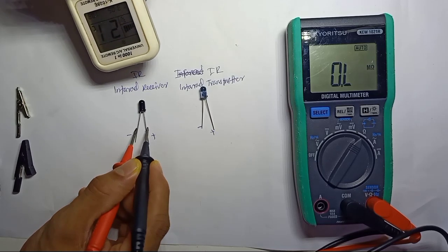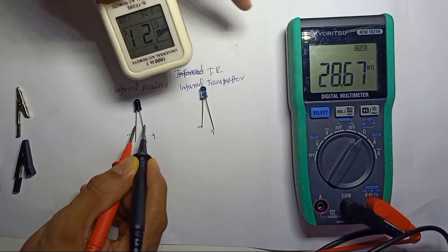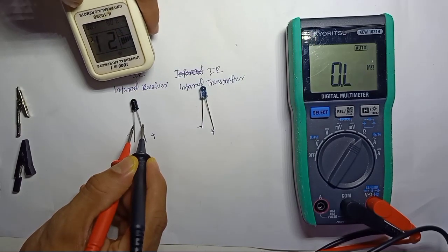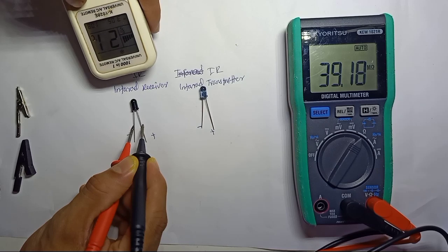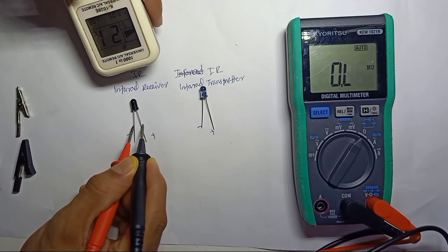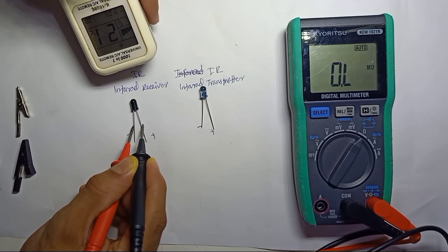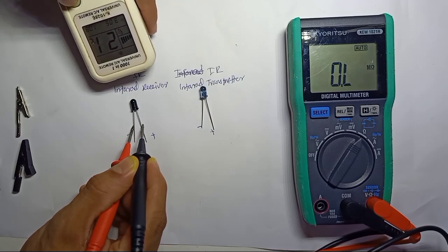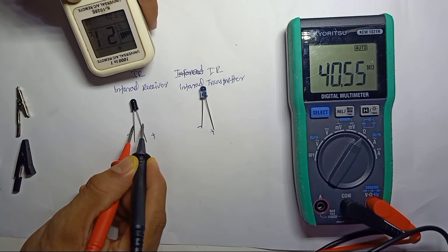The value should change on the multimeter. The ohms will change when the signal is generated. The normal state is zero, which means open circuit. Once the signal transmits, the reading changes.